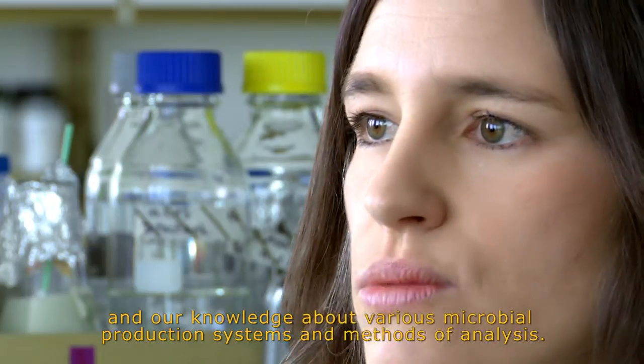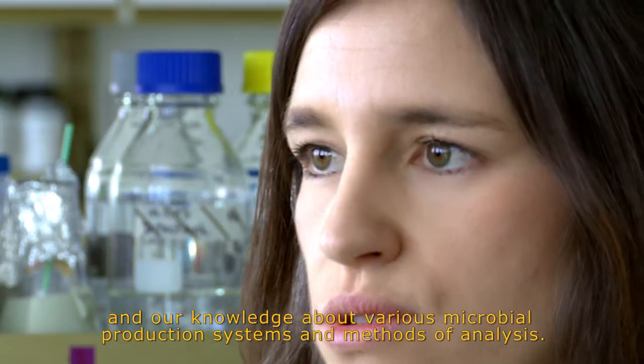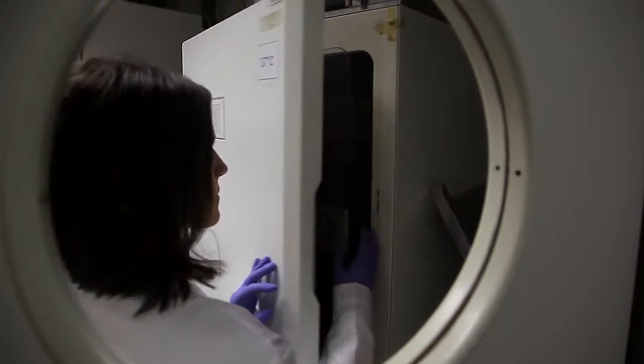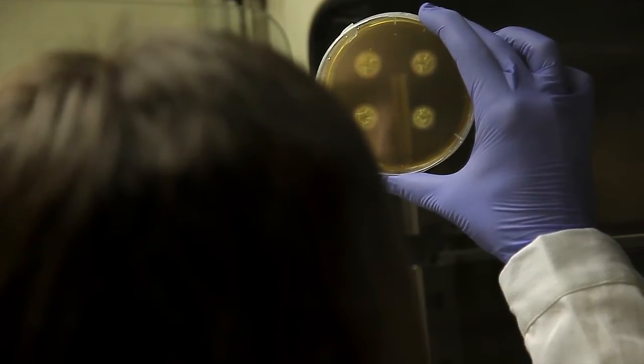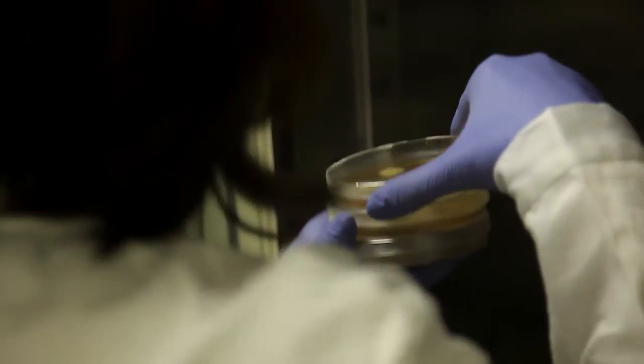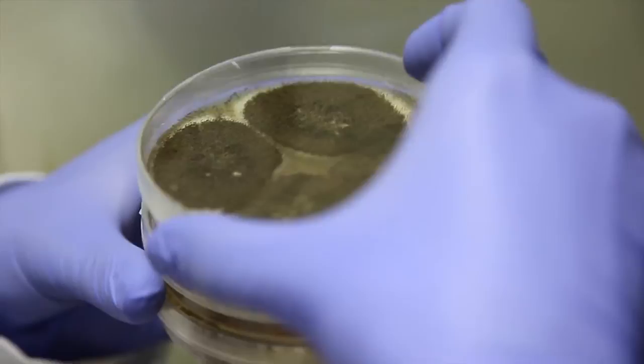We build on our long-term experience and knowledge about different microbial production systems and analysis methods. ACIB works with bacteria such as Escherichia coli, with higher order cells such as the yeast Pichia pastoris, or with fungi like Aspergillus.